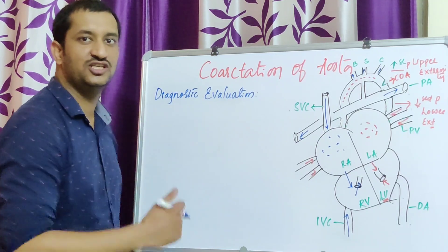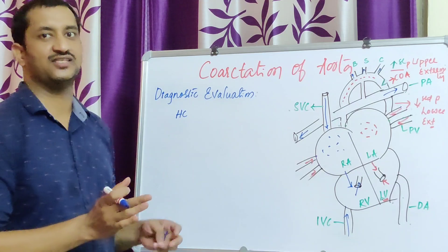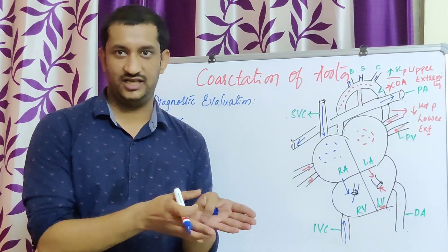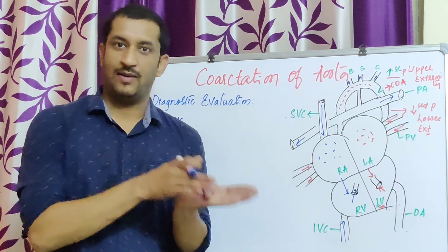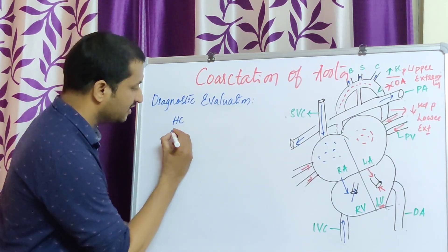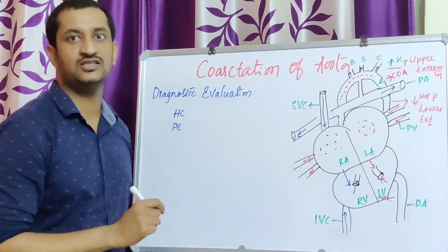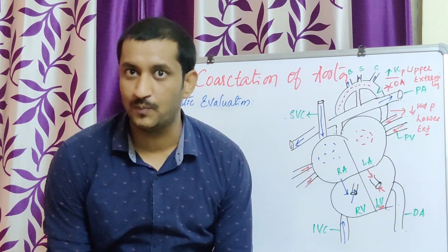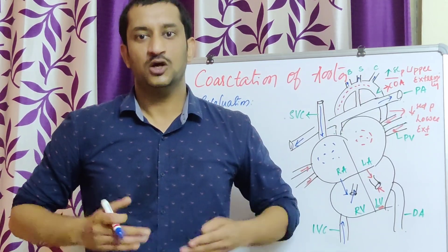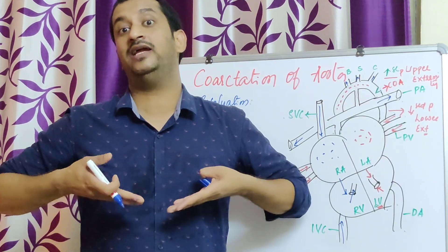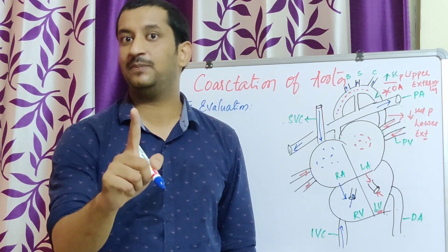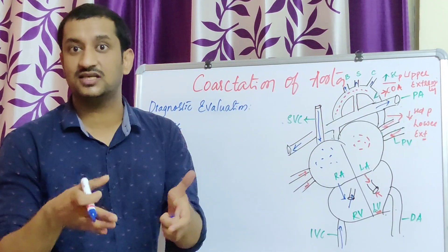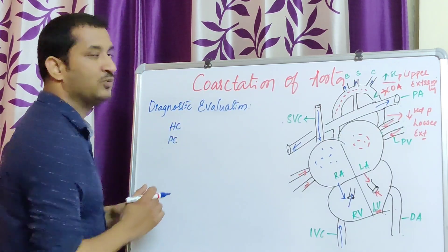Coming to the diagnostic evaluation. History collection is common here also — we will assess family history, whether somebody is suffering from congenital heart diseases, and whether the baby was exposed to radiation. For physical examination, we should always remember: whenever there is high blood pressure at the upper side of the body and low blood pressure at the lower side, or when there are cool extremities at the lower part and normal or high temperature in the upper part, 90% of the time it suggests coarctation of aorta.